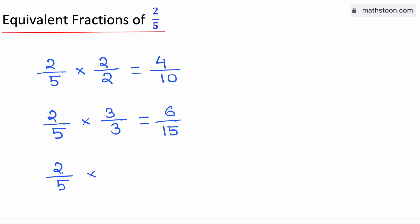And to get the third equivalent fraction of 2/5, we multiply by the same number 4. We have 2 times 4 in the top, which is 8, and 5 times 4 in the bottom, which is 20.